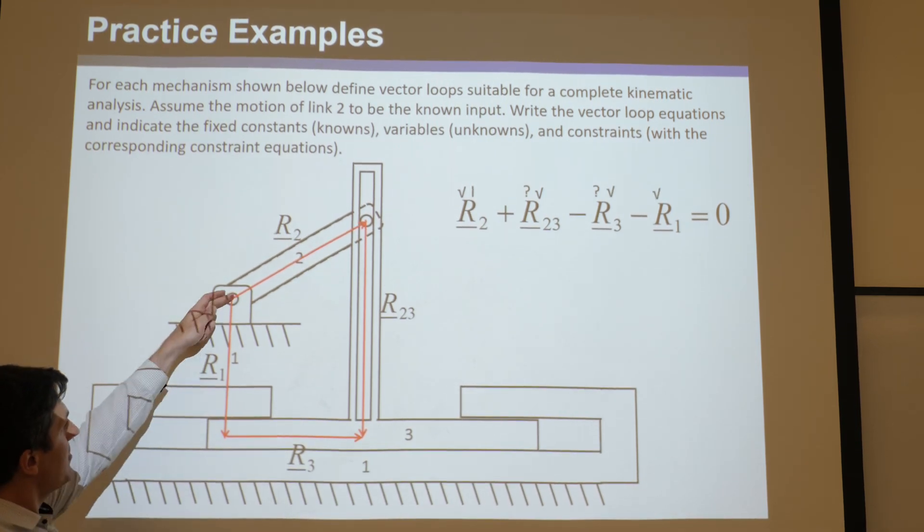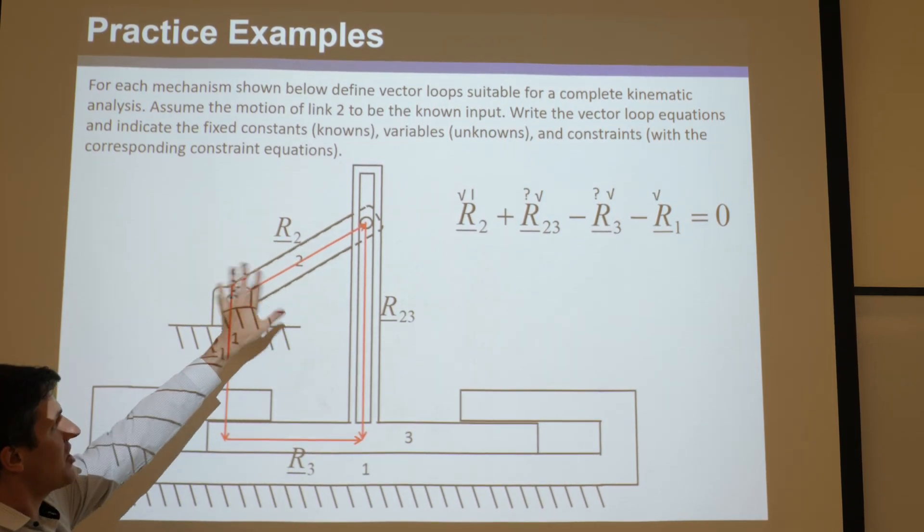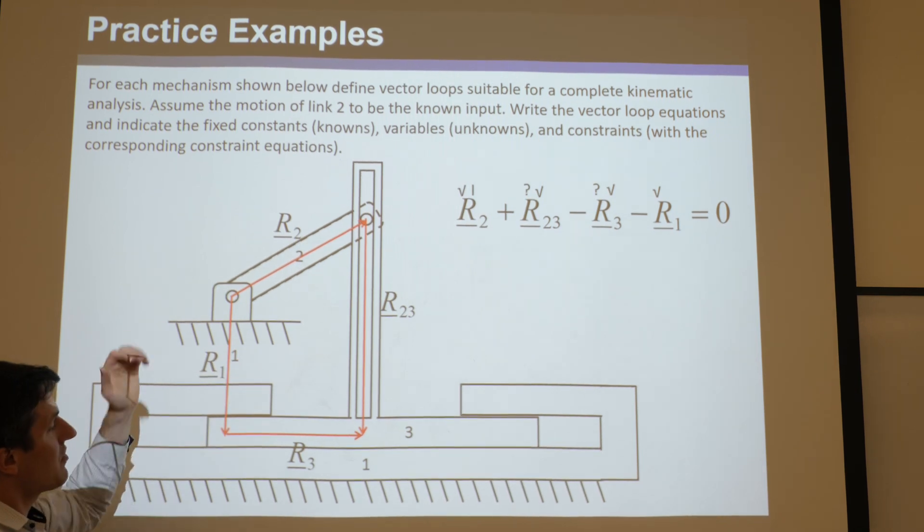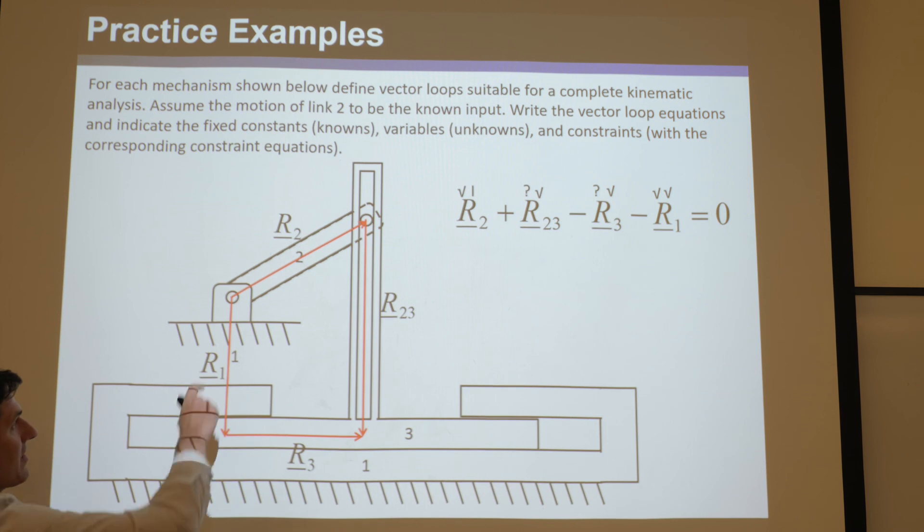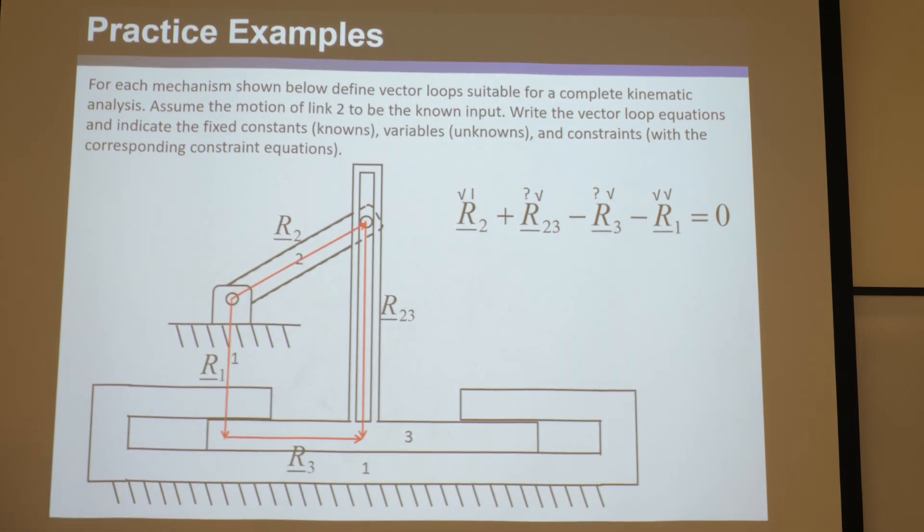And then R1, do we know the magnitude? Yeah, that's a fixed value that doesn't change as theta two changes, it's just the ground length there. And then the angle, what's the angle? Three pi over two.